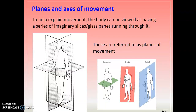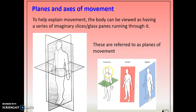For planes of movement, there are three types. The sagittal plane splits the body side to side — movement is running forwards and backwards. The frontal plane splits the body front to back — movement is side to side. The transverse plane splits the body top to bottom — movement is rotation. A clue: transverse is top to bottom, frontal is front to back, sagittal is side to side.